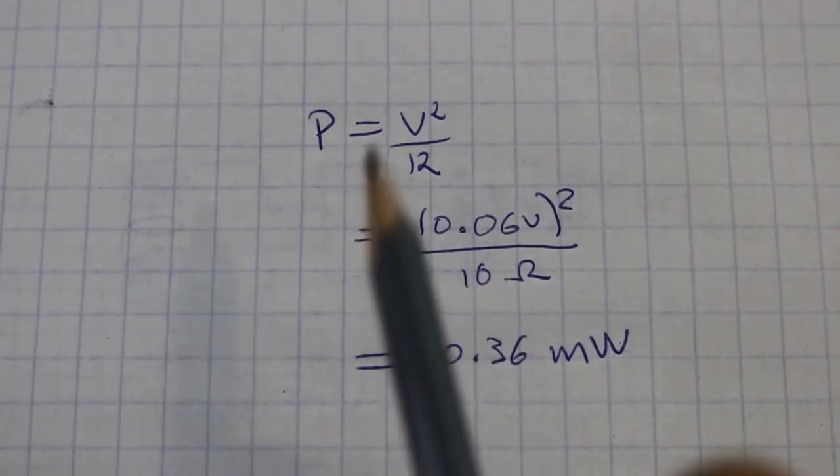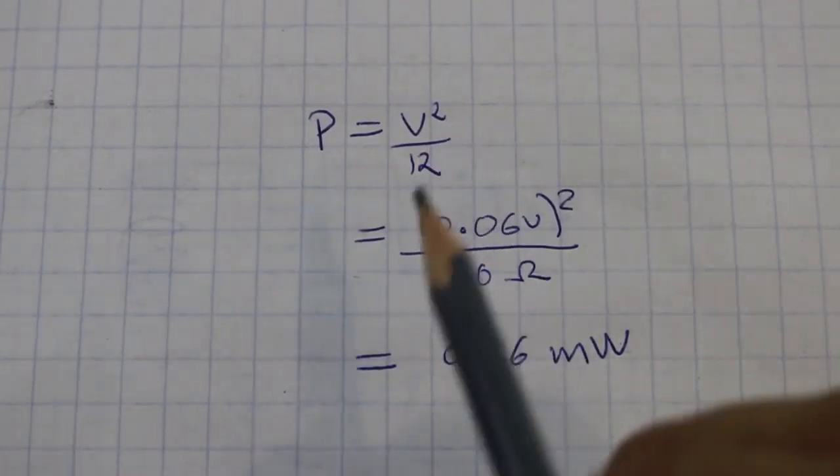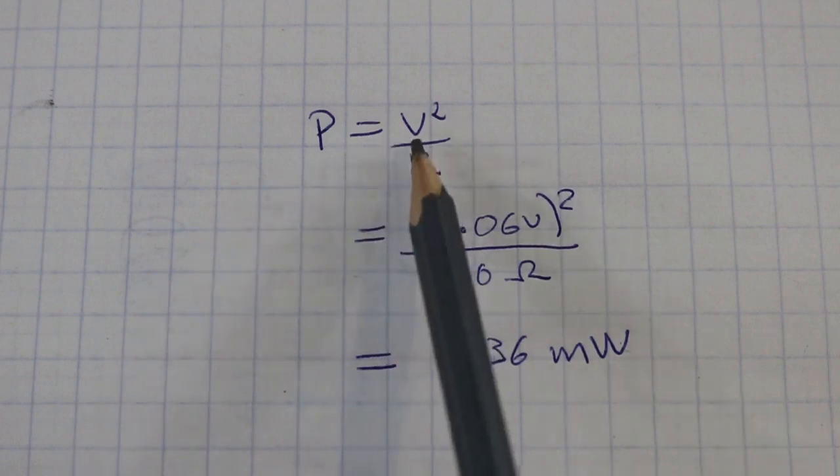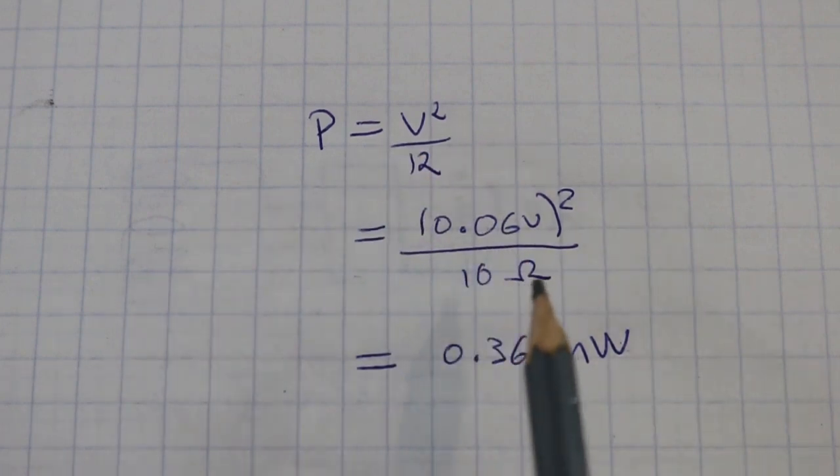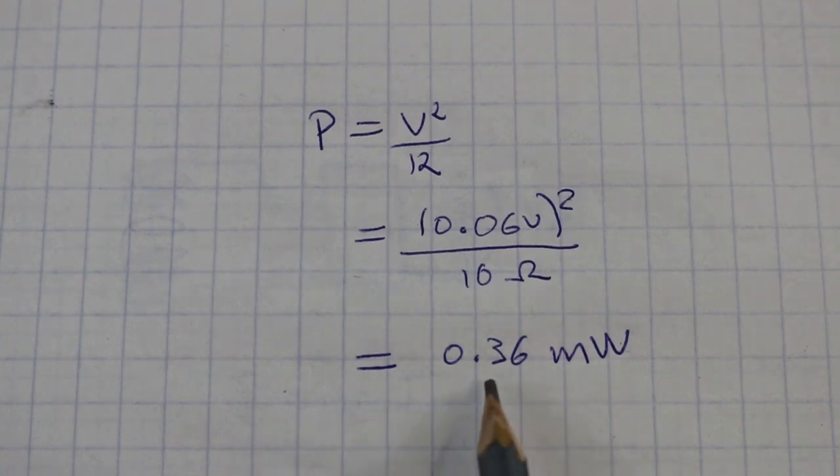Now that we know that the output voltage is 0.06 volts, we can calculate the power and we get the astounding value of 0.36 milliwatts.